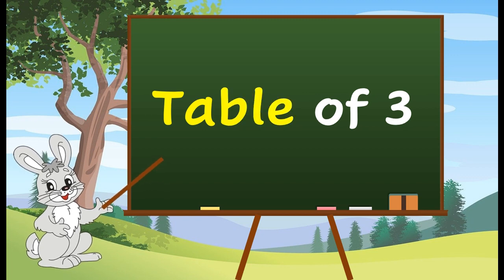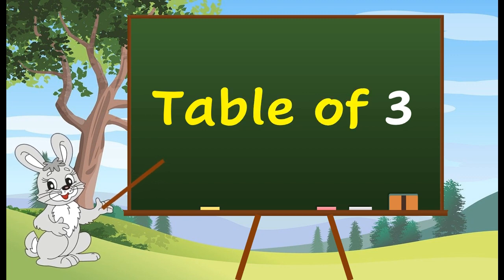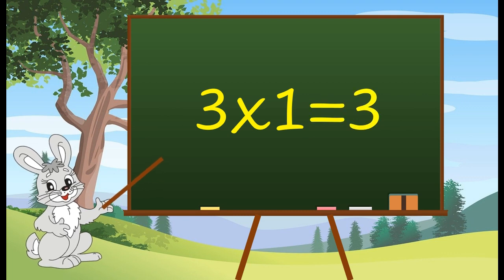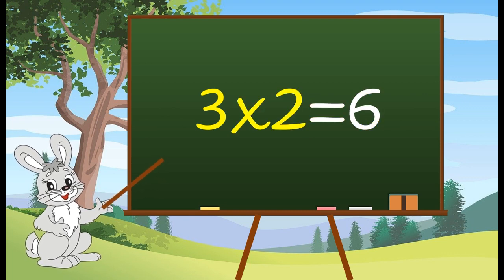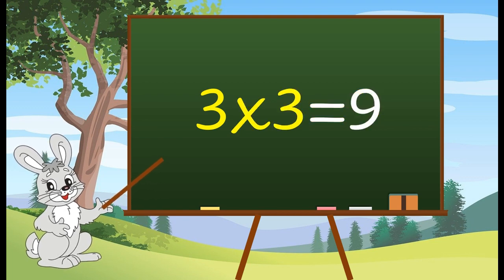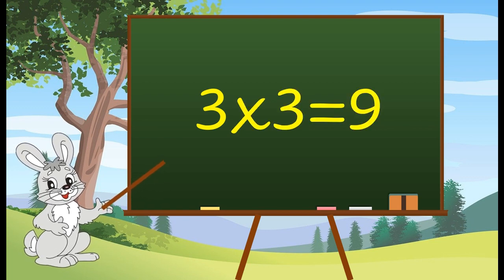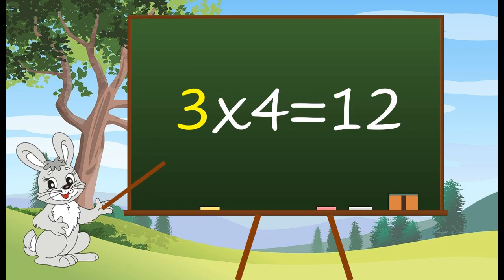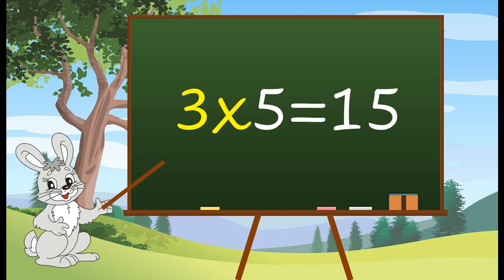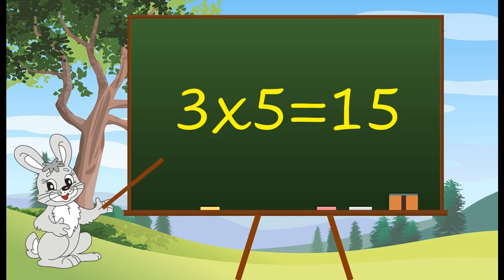Table of 3. 3 1's are 3. 3 2's are 6. 3 3's are 9. 3 4's are 12. 3 5's are 15. 3 6's are 18.